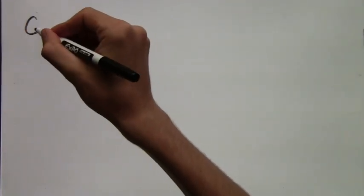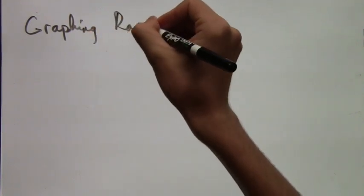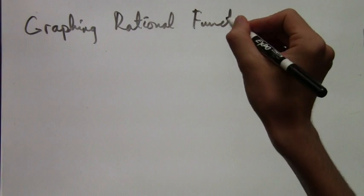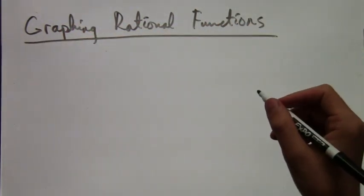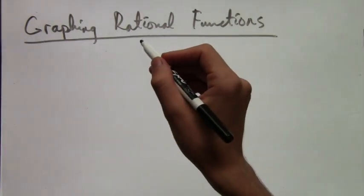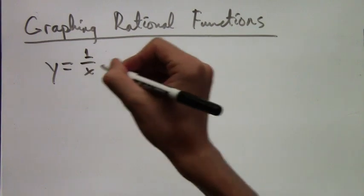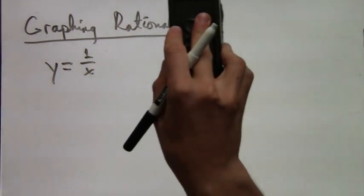In this video lesson we will talk about how to graph rational functions. So first let's remember what rational functions are. Really, the most important rational function, the most simple one, is just y equals 1 over x. But they're all something divided by something with x's.